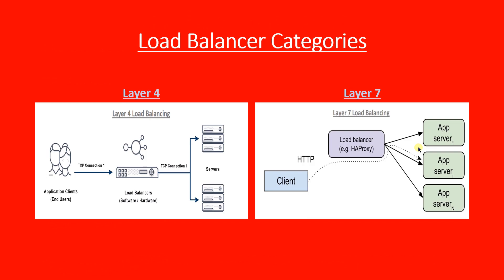Coming to load balancer categories, there are two categories: Layer 4 and Layer 7. Layer 4 load balancers distribute connections based upon data found in network and transport layer protocols such as IP, TCP, UDP, FTP, and so on. Layer 7 load balancers distribute connections based upon data found in application layer protocols such as HTTP.